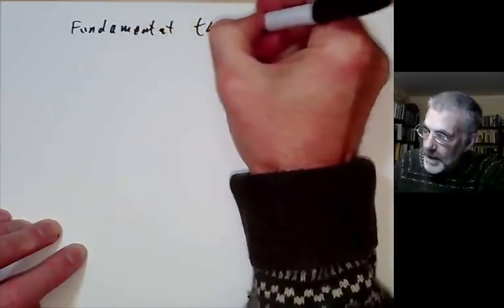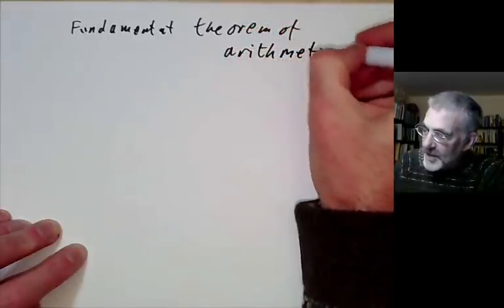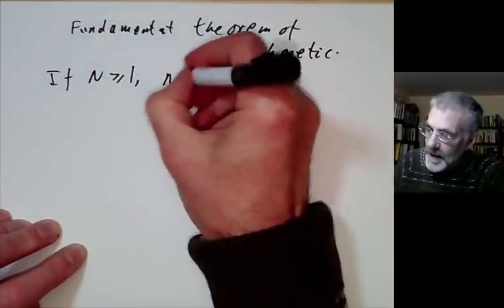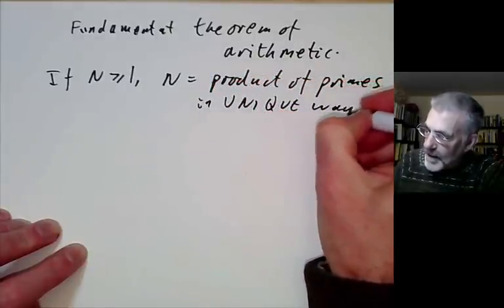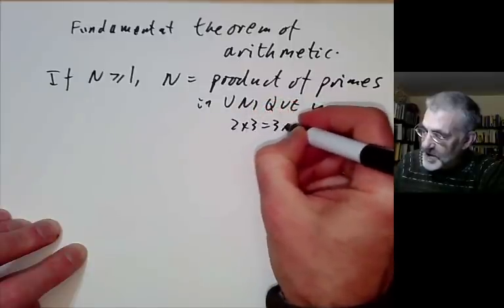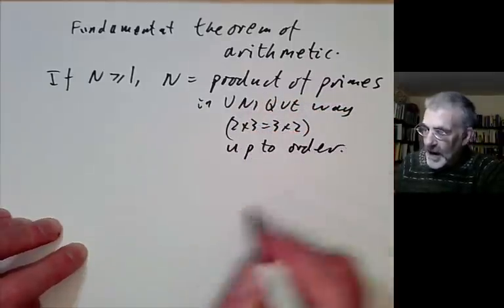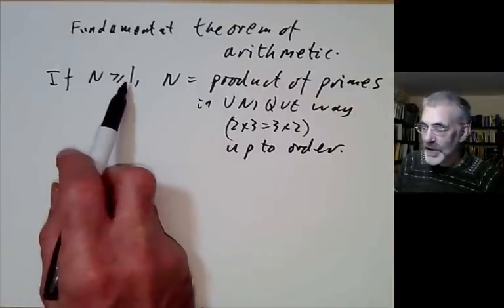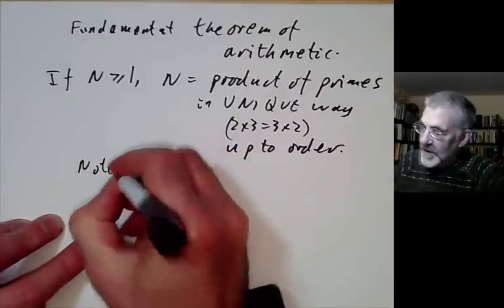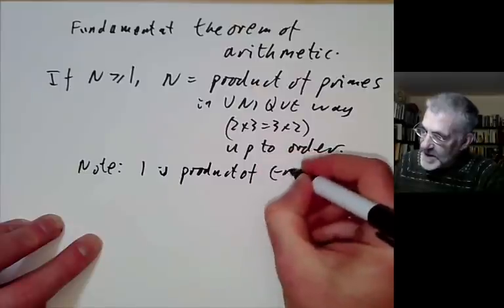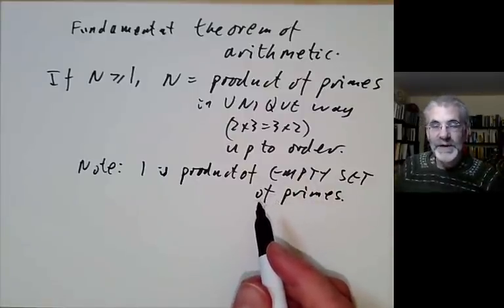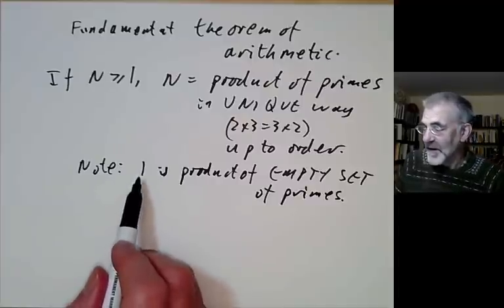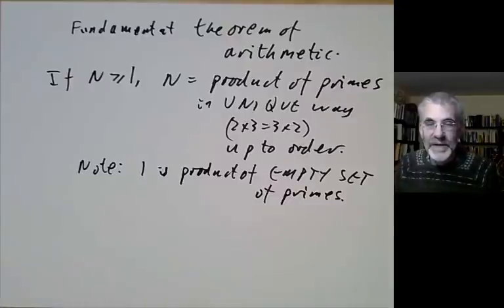Now we have the fundamental theorem of arithmetic, which says that any n ≥ 1 is a product of primes — a finite set of primes — in a unique way, up to order. Note that n = 1 is a product of the empty set of primes, since by convention the product of an empty set of numbers is taken to be 1, much as the sum of an empty set is taken to be 0. This convention makes several theorems easier to state.